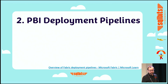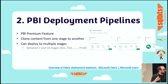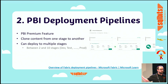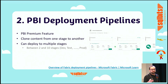Deployment Pipelines — it's a Power BI premium feature. It allows us to clone content from one stage to another. When I talk around stages, I'm talking about things like development, test, pre-prod, all the way through to production. When it originally launched, Power BI deployment pipelines had three stages — it's now been expanded to range from two to ten stages within the service.